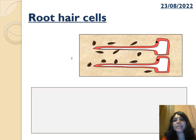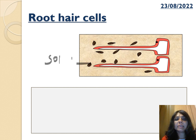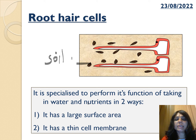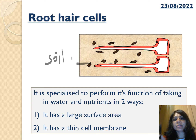In this slide we have the root hair cell. You can see it has a large surface area to absorb all the nutrients from the soil around it. Its job is to absorb minerals and liquid so they can travel into the plant through the stem. The thin cell membrane makes absorption easier. We normally represent them as thin thread-like structures — quite thin but with a large surface area.